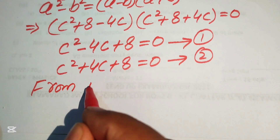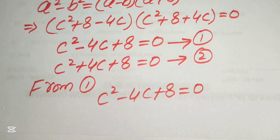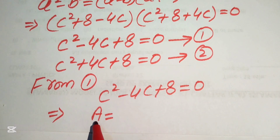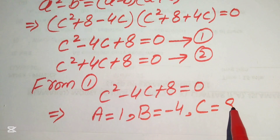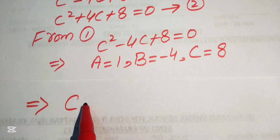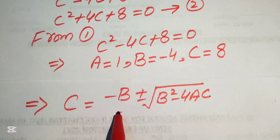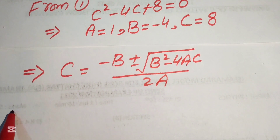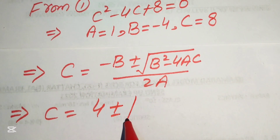From equation 1, c squared minus 4c plus 8 equals 0 is a quadratic equation. Using the quadratic formula, we identify the coefficients: capital A equals 1, capital B equals minus 4, and capital C equals 8. The quadratic formula gives c equals minus b plus or minus square root of b squared minus 4ac, divided by 2a.